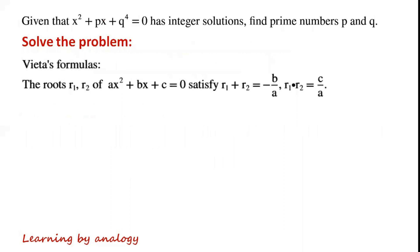Vieta's formulas: the roots r1, r2 of ax squared plus bx plus c equals 0 satisfy the following relations.